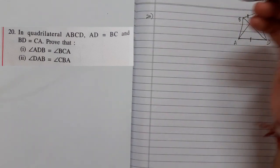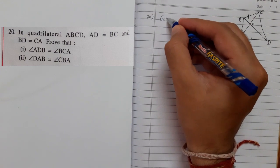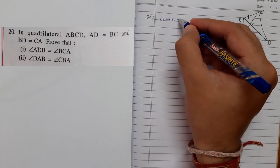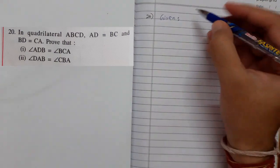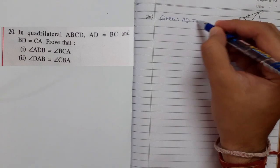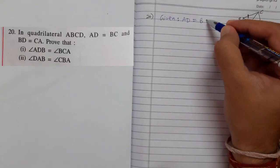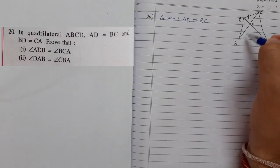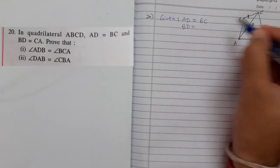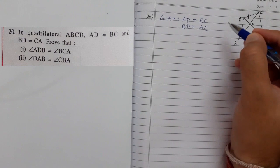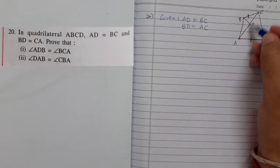So let me write the given things. First given thing was AD equals BC, and second thing was BD equals AC. So this part is equal to this whole part.